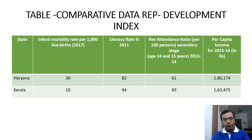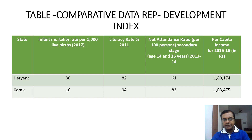The net attendance ratio of students for secondary education, as per the 2013–14 survey, shows Haryana at 61 compared to Kerala at 83. The per capita income figure of Kerala as per the 2015–16 survey stands at ₹1,63,475, compared to Haryana which stands at ₹1,80,174.